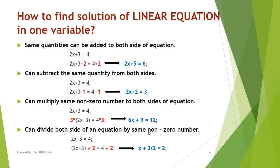The fourth step: you can divide both sides of an equation by the same non-zero number. Dividing both sides by 2 gives x plus 3/2 equals 2, and you will still get the same value of x. You can use any one or two of these four steps to solve your linear equation.